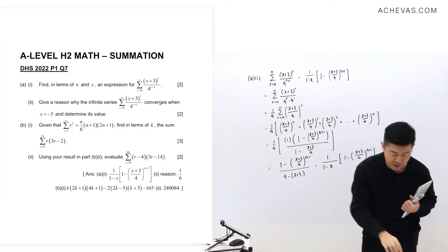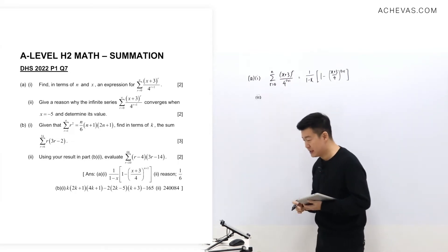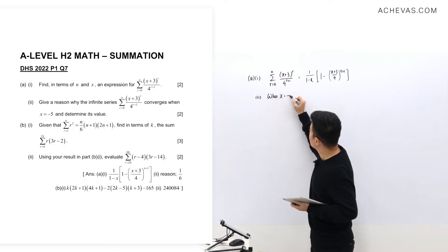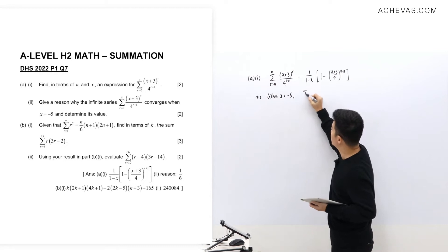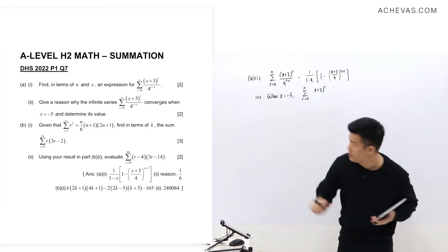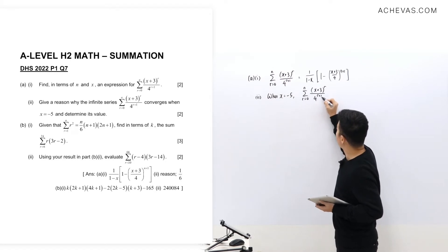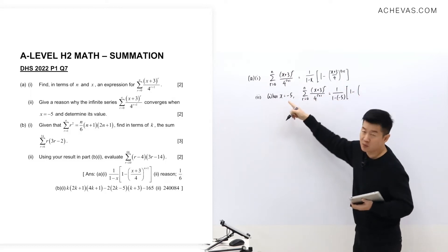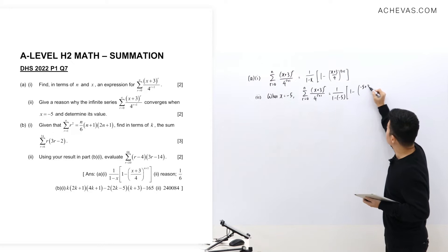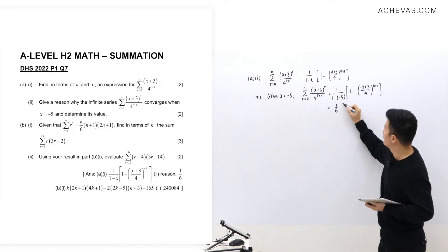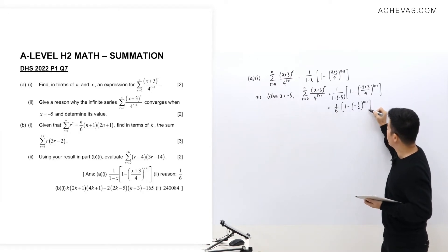Let's look at Part A2, where we are given x = -5. When x = -5, substituting into the sum formula gives 1/(1-(-5)) × [1 - ((-5+3)/4)^(n+1)], which equals 1/6 × [1 - (-1/2)^(n+1)].